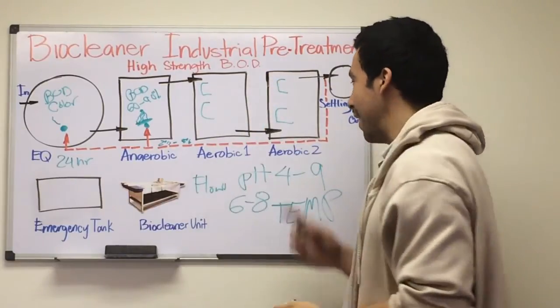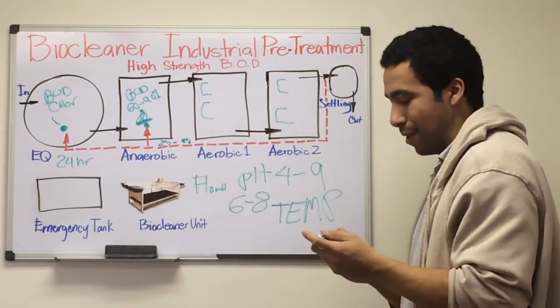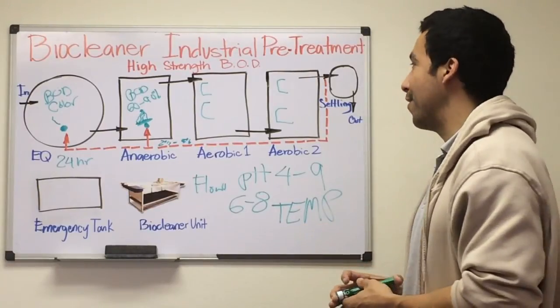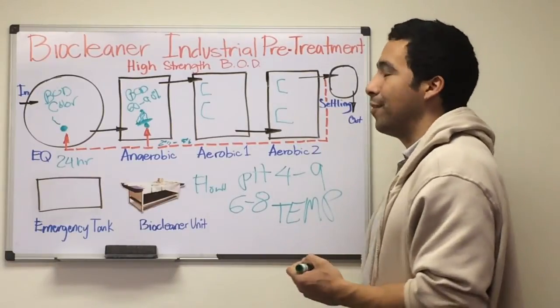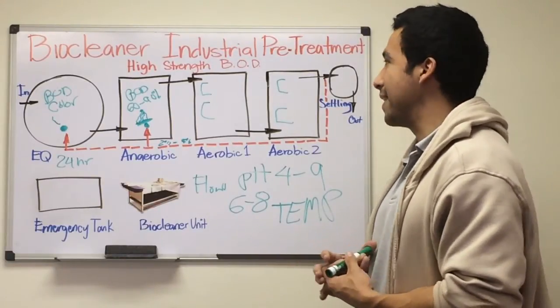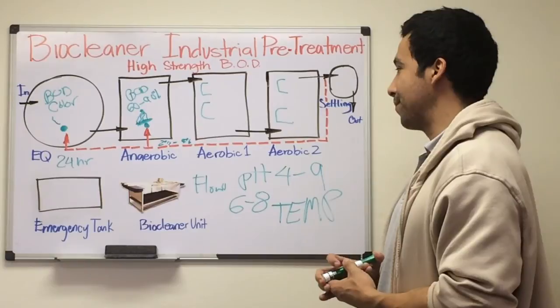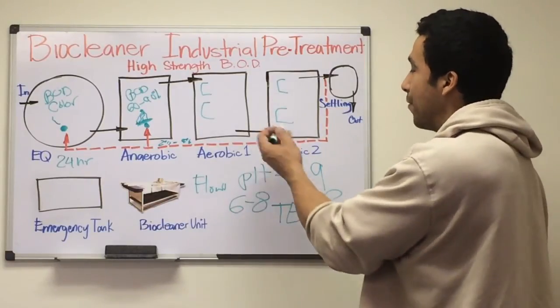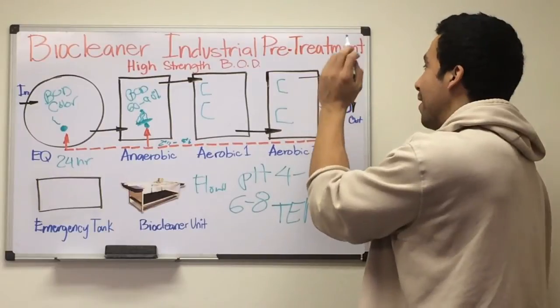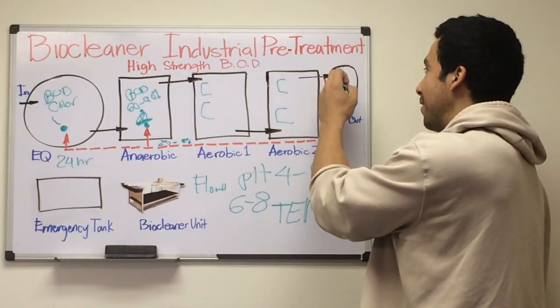Usually the second tank will have more units to create a polishing effect to clean the water quality even further. The number of units will be discussed in a later video. After aerobic treatment, it goes to settling where smaller solids will settle to the bottom.